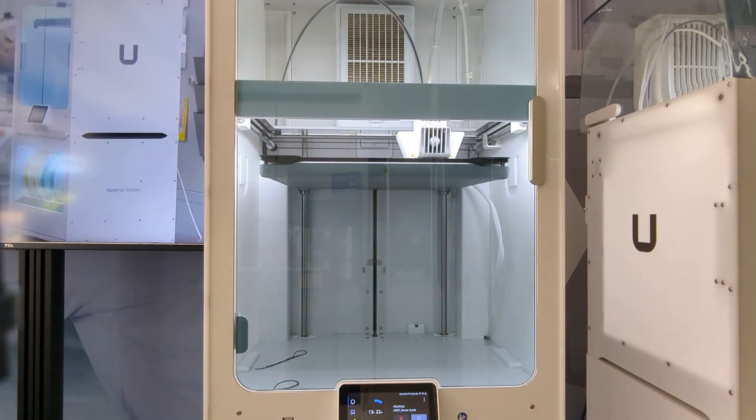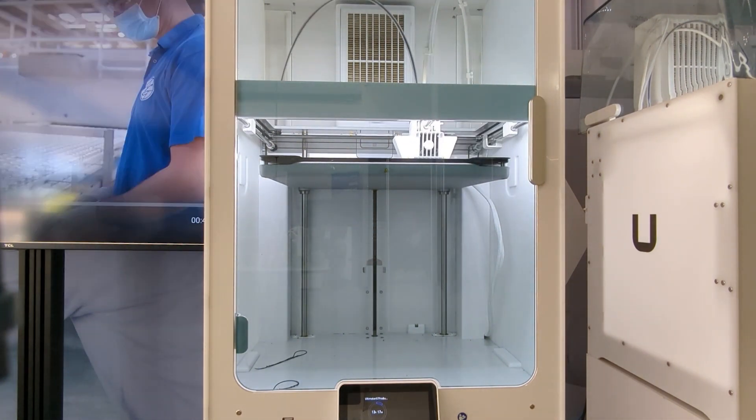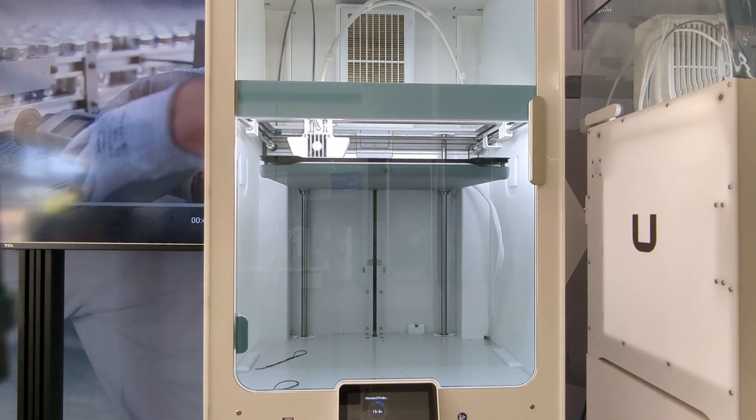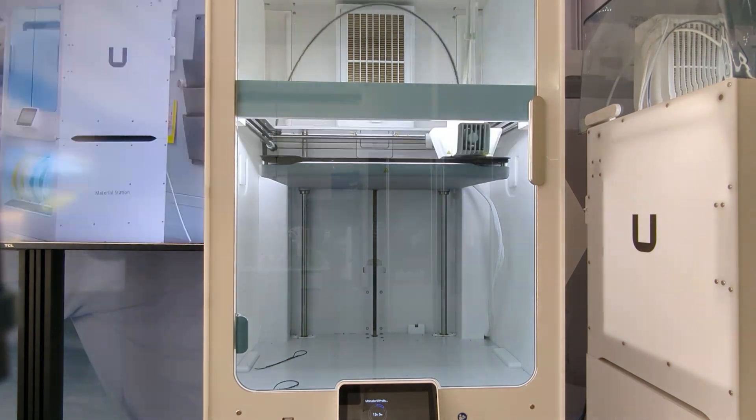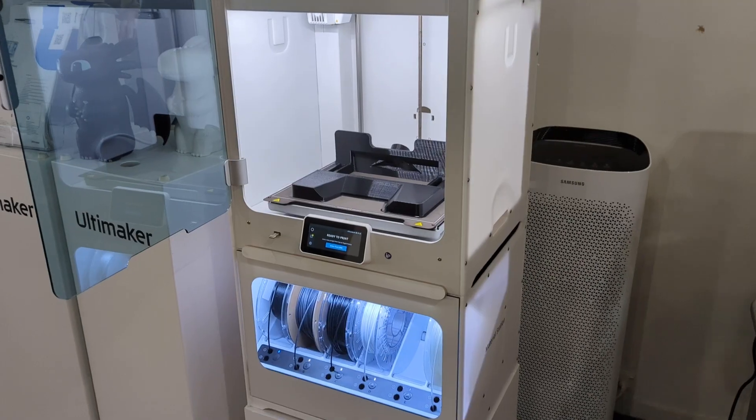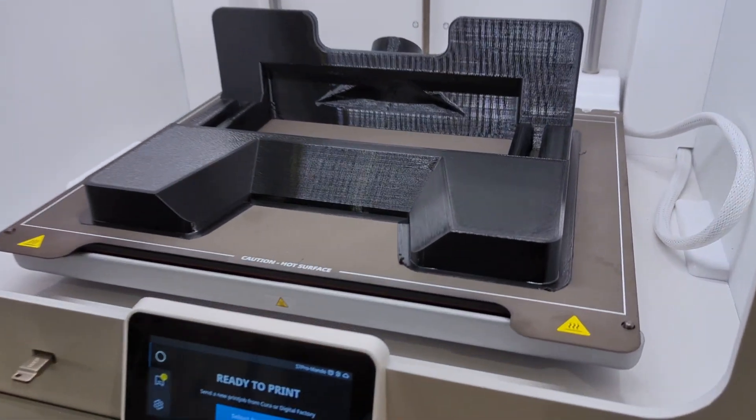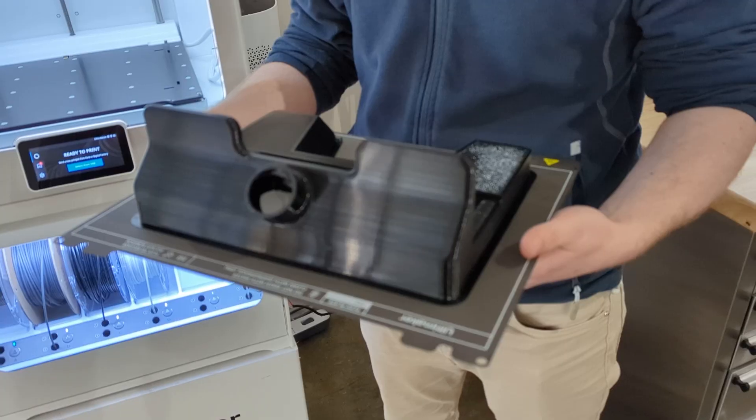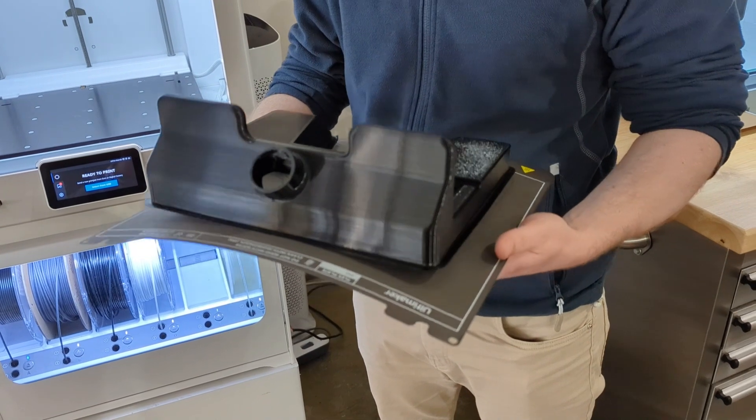The enclosure of the 3D printer, coupled with the HEPA filter, helps maintain the temperature within the printer constant to ensure a successful print all the time. This is what it looks like when it's finished printing. And because it has a flexible build plate, it's really easy to remove.